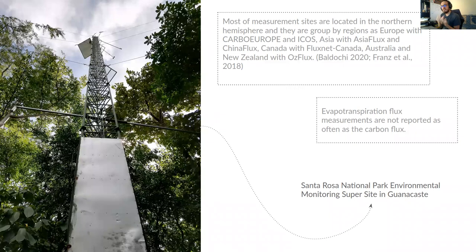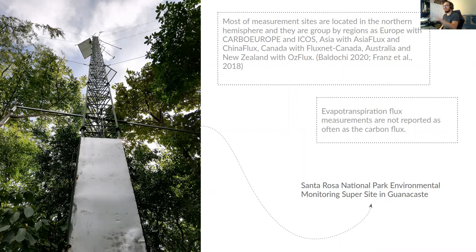One of the things that happens with this technique is that most measurement sites are located in the northern hemisphere — for example, Europe, Canada, the United States, Australia, and New Zealand. There are not many sites in the tropics, and especially in an ecosystem like the tropical dry forest.